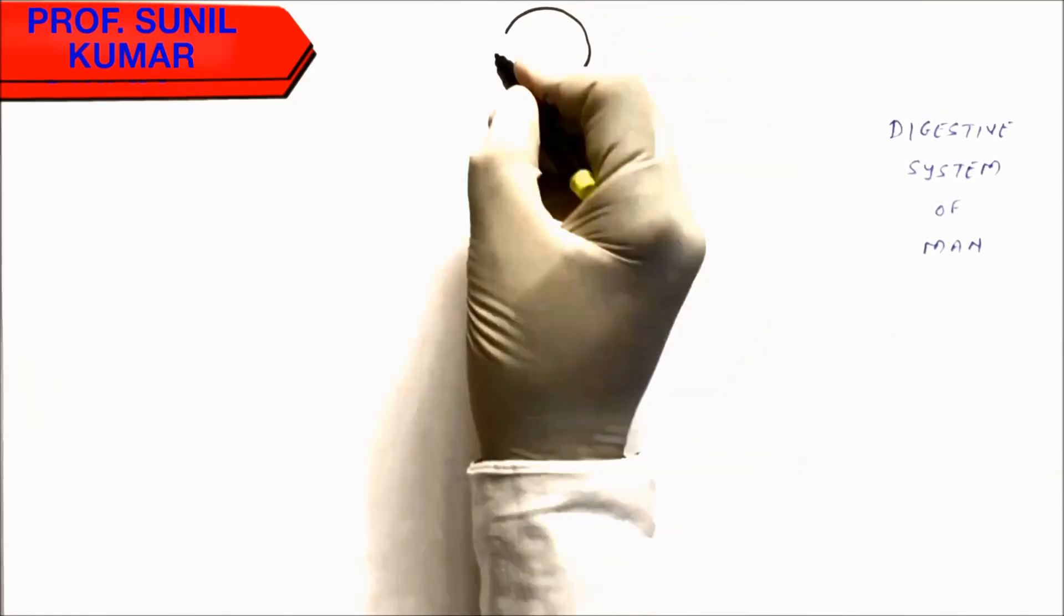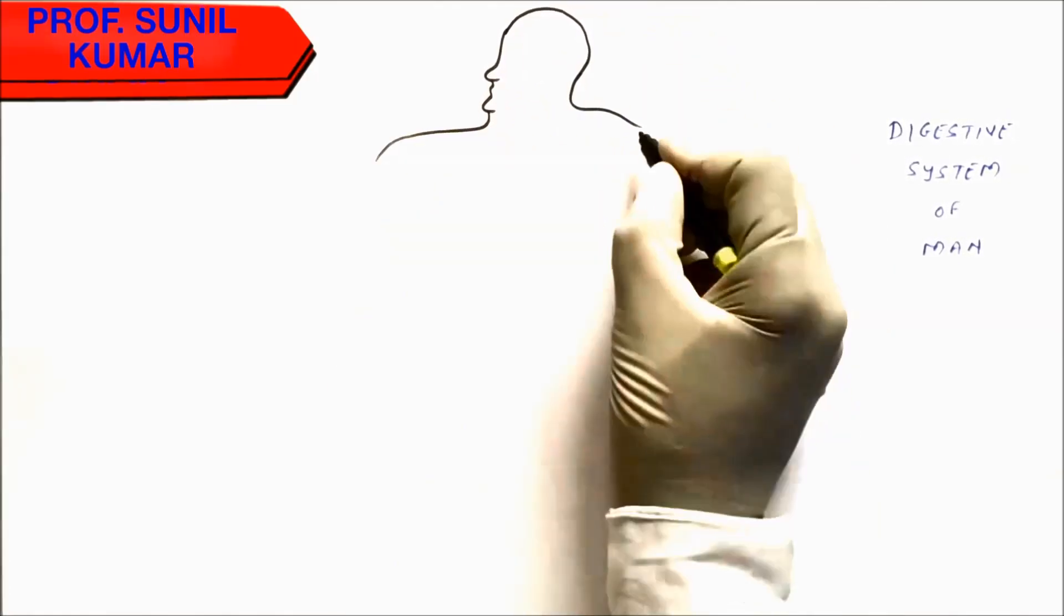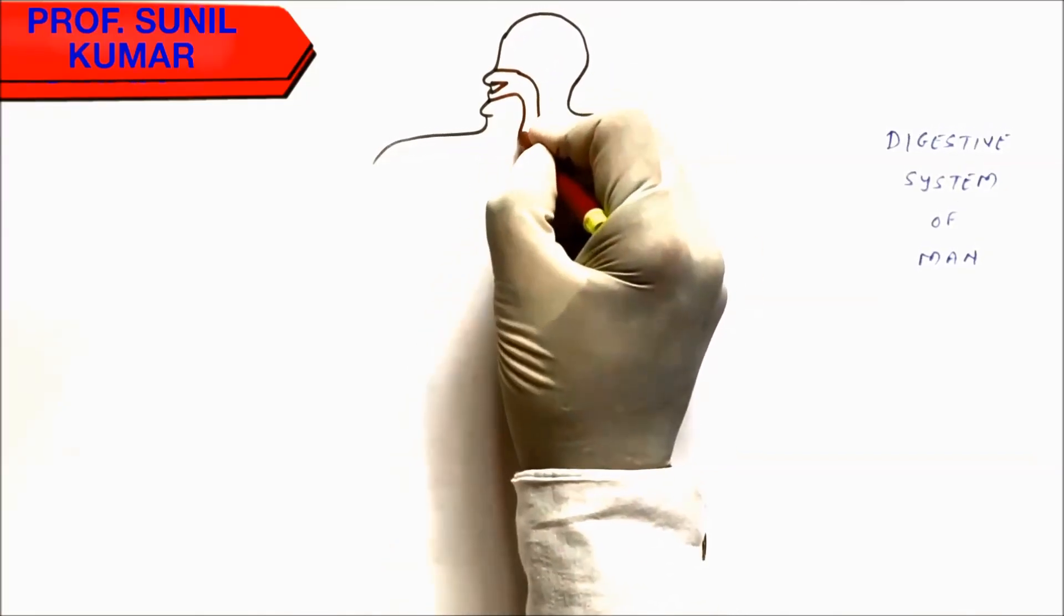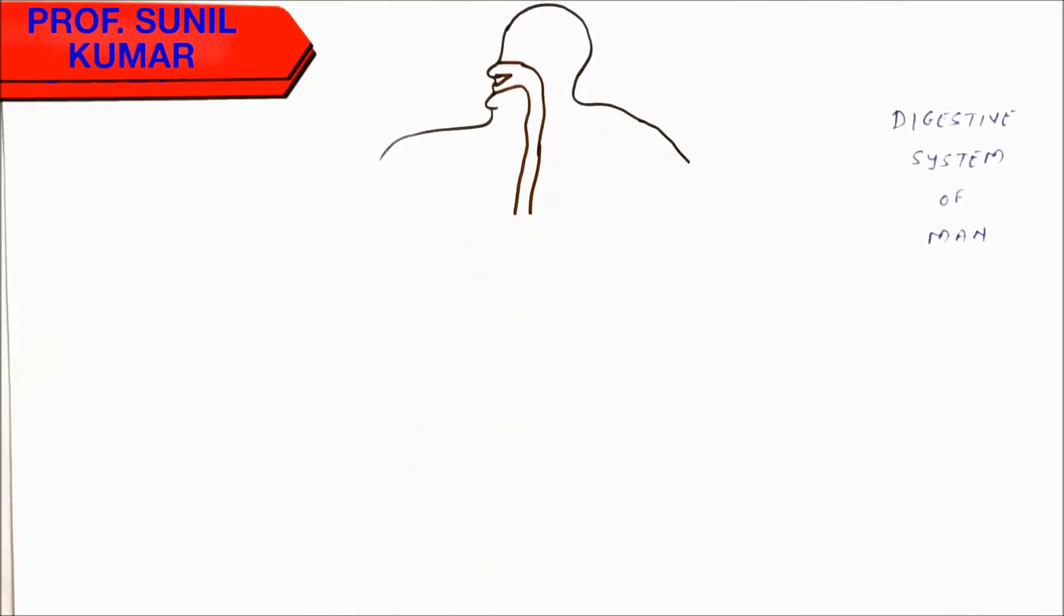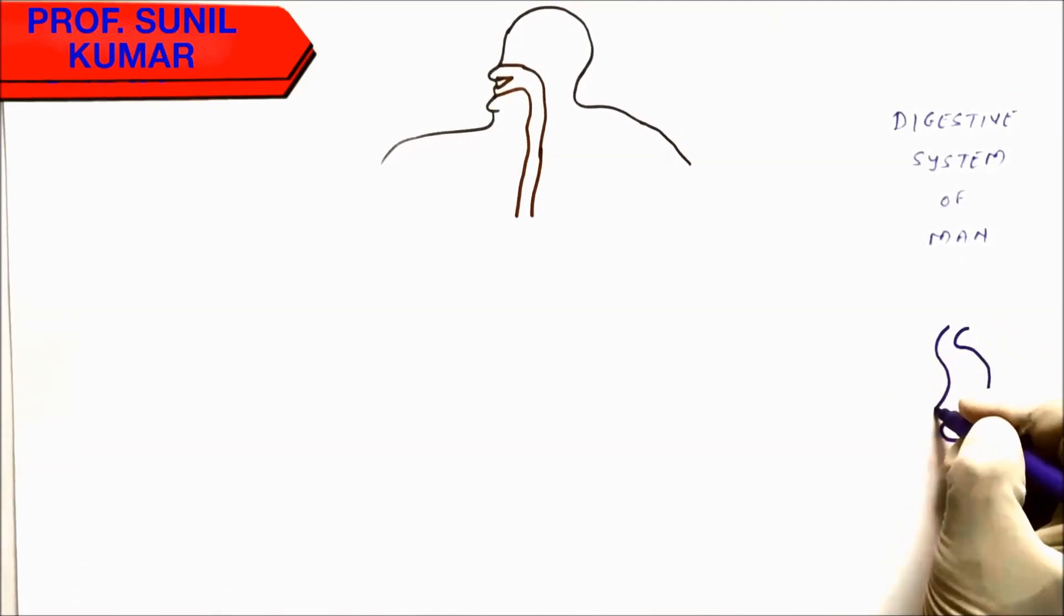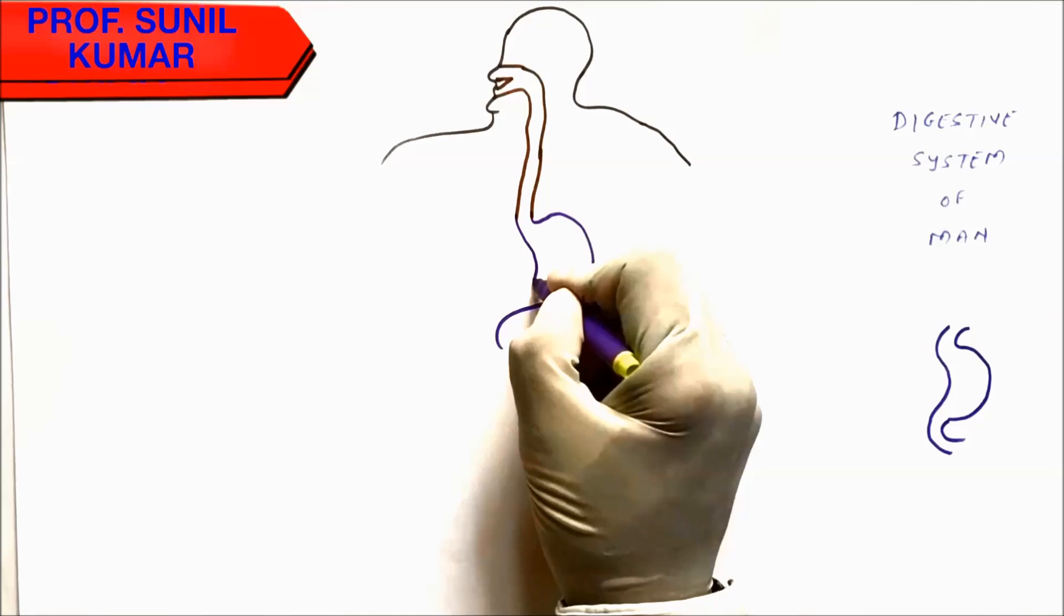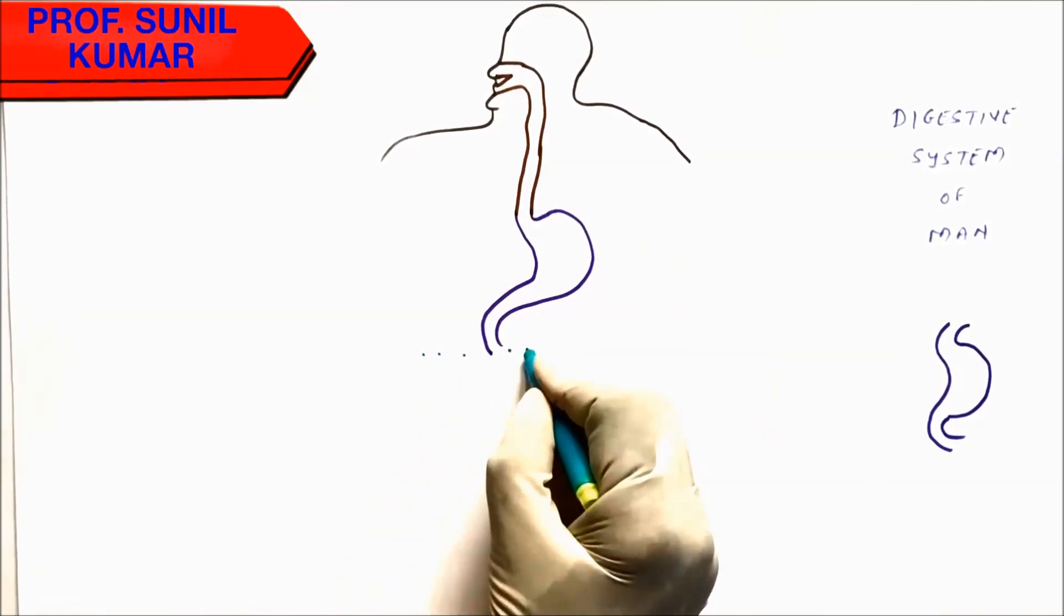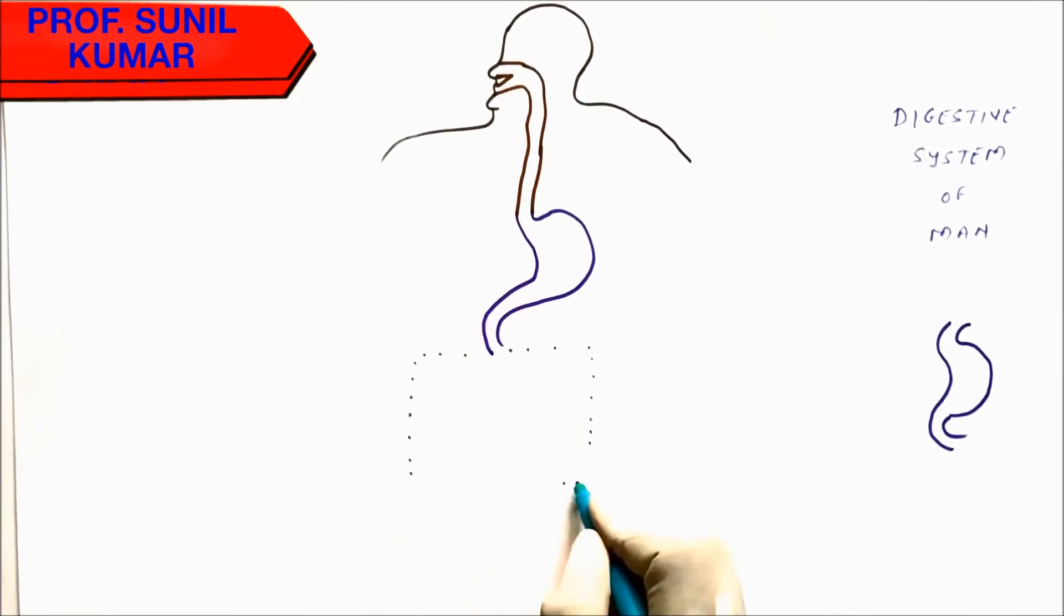Friends, let's understand how to draw the digestive system in a simple way. Draw the face first, then from the nose bring a tube down, and from the mouth draw the esophagus. Draw a C for the stomach, a little bit stylish. This is the C you draw—it becomes your stomach.